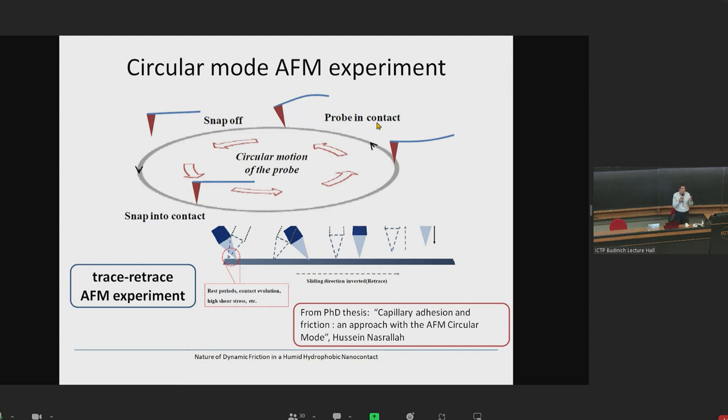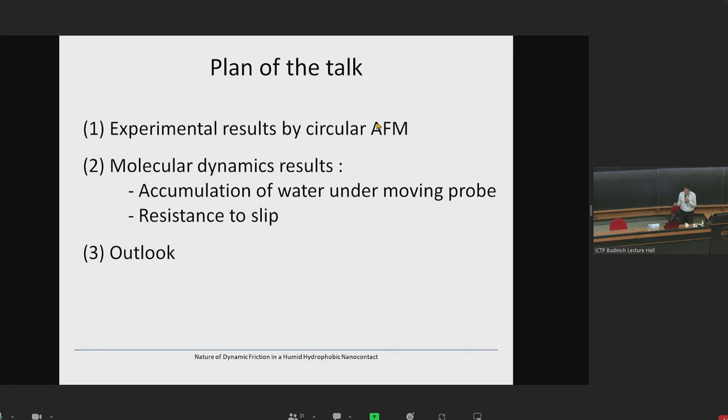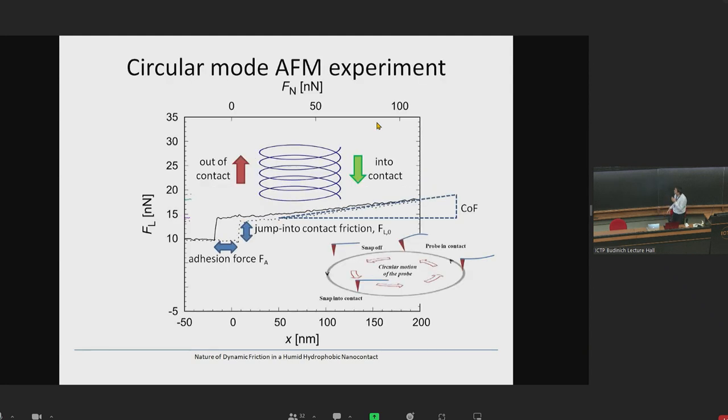So, what Olivier is doing, and in order that you understand how we came to ideas in this talk, is circular mode AFM. So, circular mode AFM means that his probe is making a circle, and he can measure both lateral and normal force simultaneously. And that means that he never interrupts movement by going back and forth like in classical AFM. Just briefly, that you know what is the plan of the talk, I am going to tell you something about results by AFM. Then, talk about results in simulations where we try to see what is happening in these experiments, and give just short conclusion and outlook.